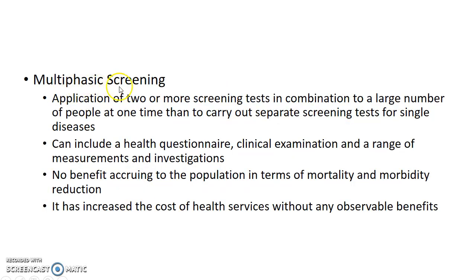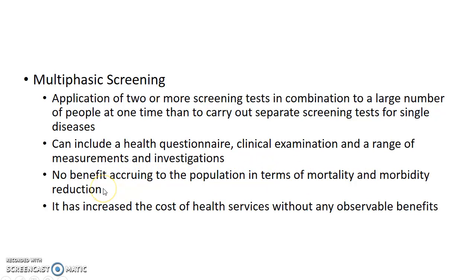Now let us see about multiphasic screening. Application of two or more screening tests in combination to a large number of people at one time, rather than carrying out separate screening tests for single diseases, is called multiphasic screening. It can include a health questionnaire, clinical examination, and a range of measurements and investigations. However, it has been found that no benefit is accruing to the population in terms of mortality and morbidity reduction due to multiphasic screening, and it has increased the cost of health services without any observable benefits.